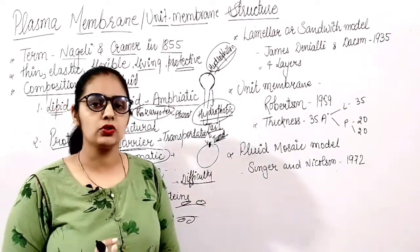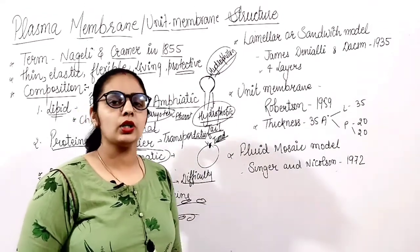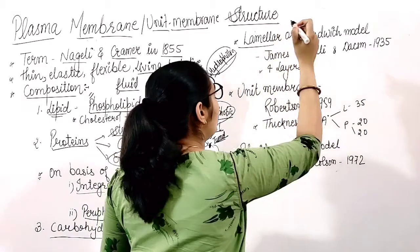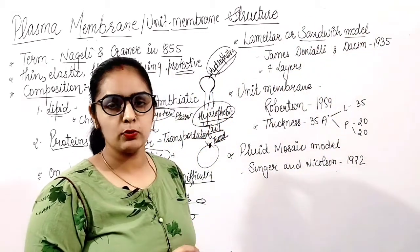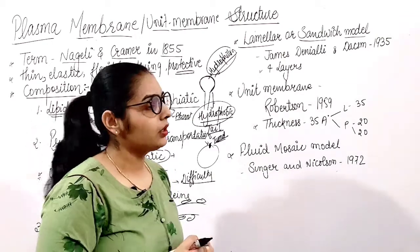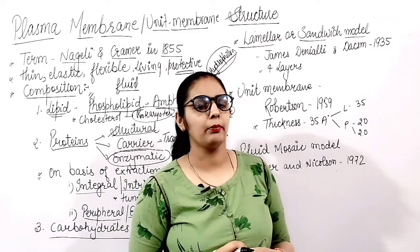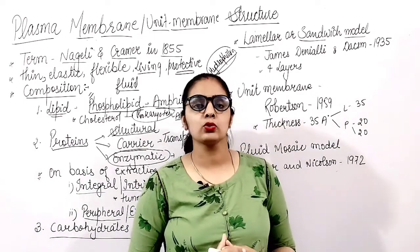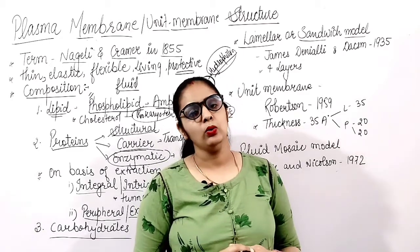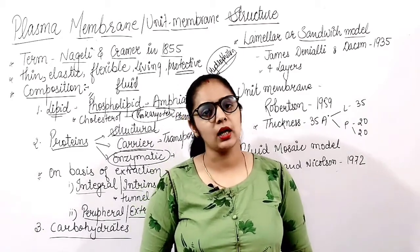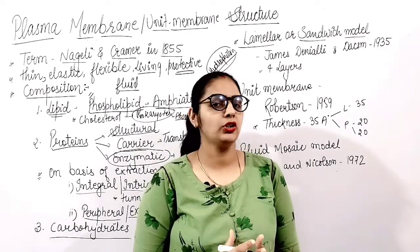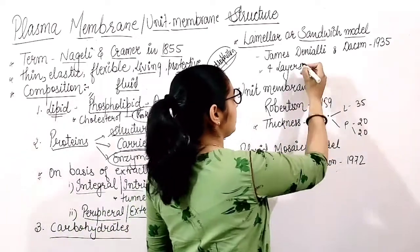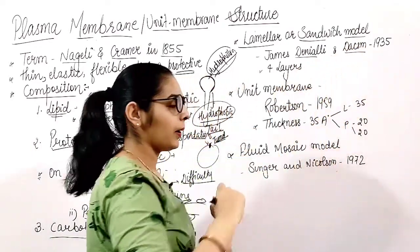Now we will talk about the structure of the plasma membrane. Different models explain its structure. The study of plasma membrane structure became easier with the development of the electron microscope. The first model was the lamellar or sandwich model, proposed by Danieli and Davson in 1935.